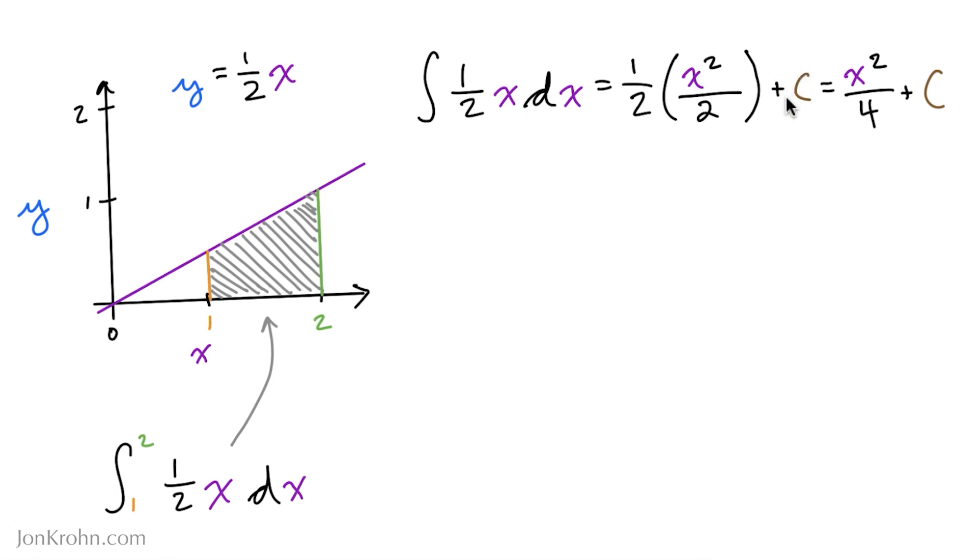Don't forget that within definite integrals, we have this constant of unknown value that is present, and you need to make sure that you include that. So simplifying a little bit, we can multiply half into the brackets here. And so instead of having x squared divided by 2, we end up with x squared divided by 4. And yes, that plus c is still kicking around.